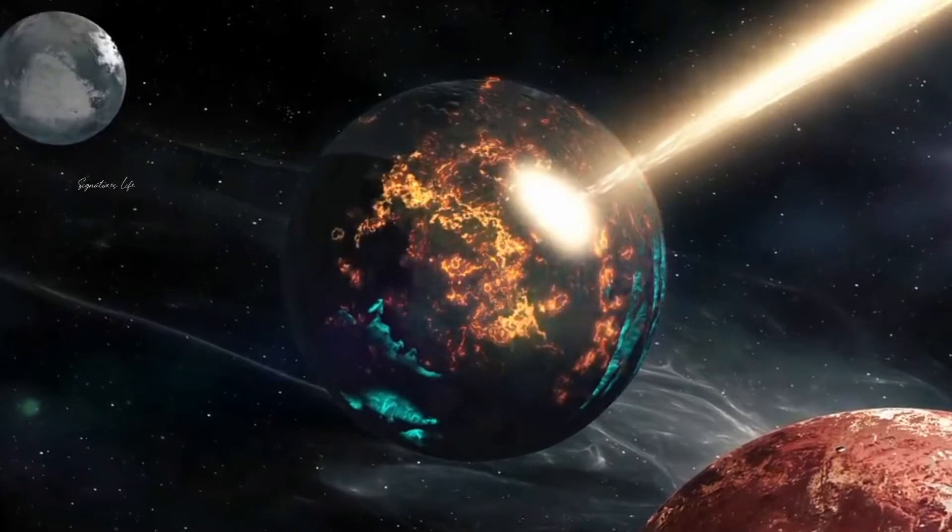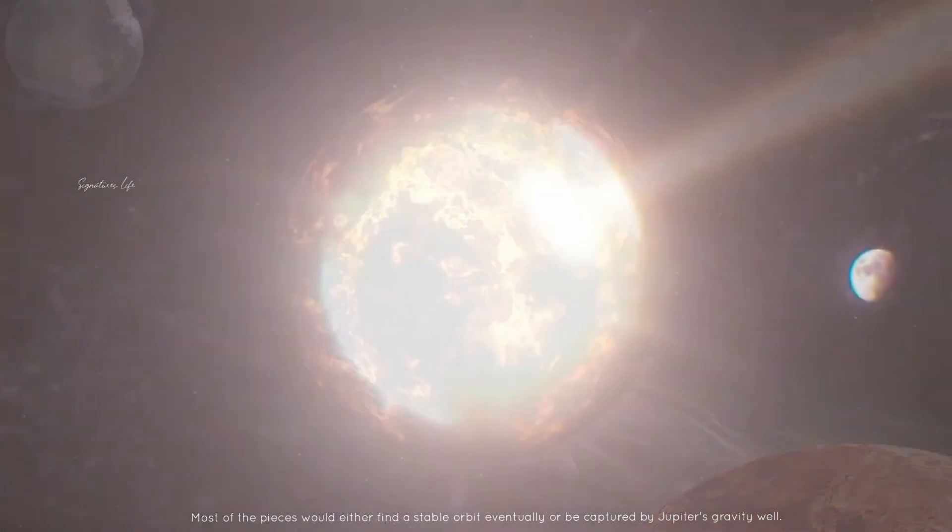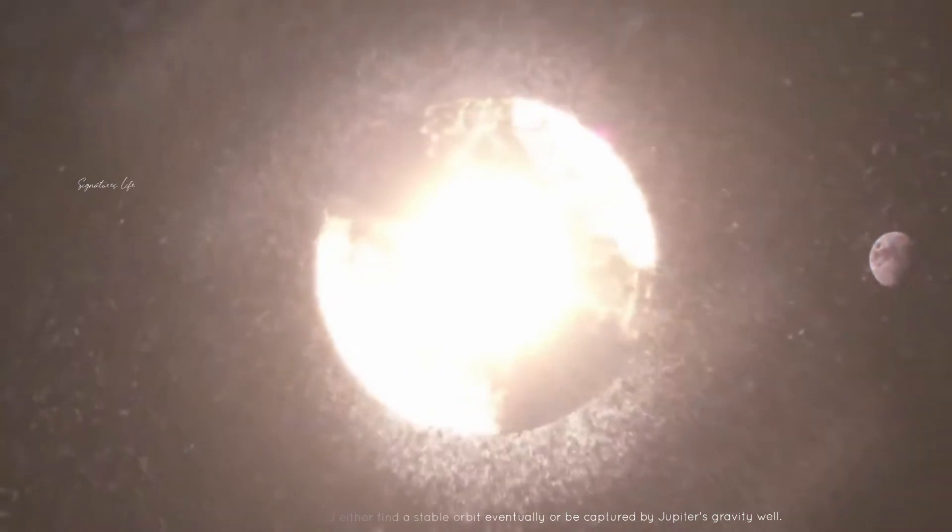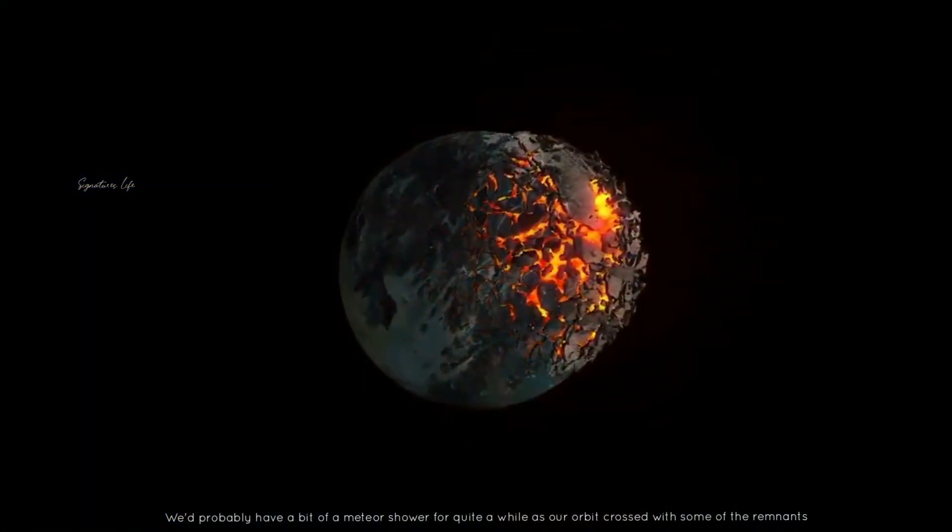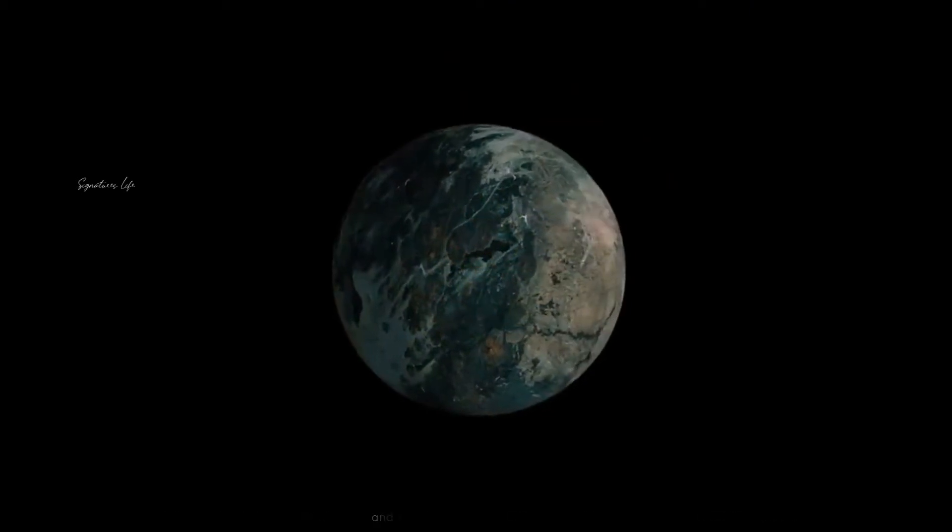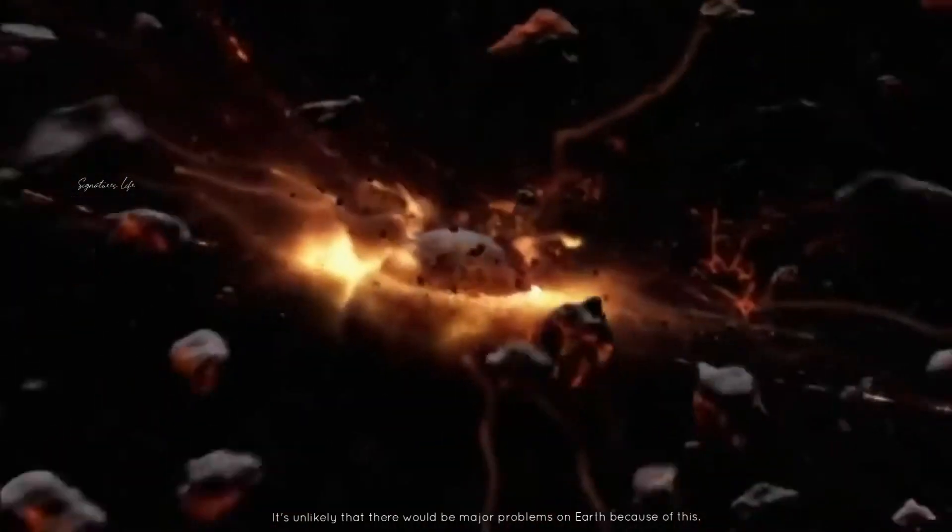Depending on how it blew up, most of the pieces would either find a stable orbit eventually or be captured by Jupiter's gravity well. We would probably have a bit of a meteor shower for quite a while as our orbit crossed with some of the remnants and they burned up in our atmosphere. It is unlikely there would be major problems on Earth.